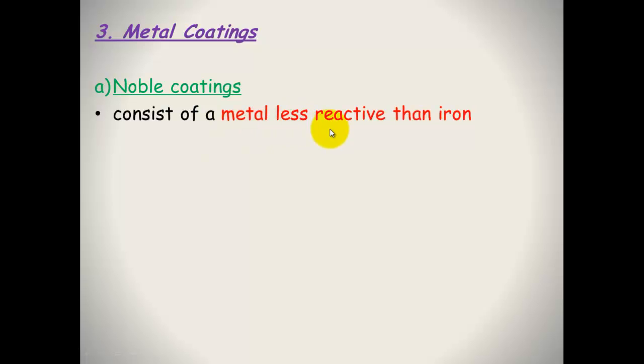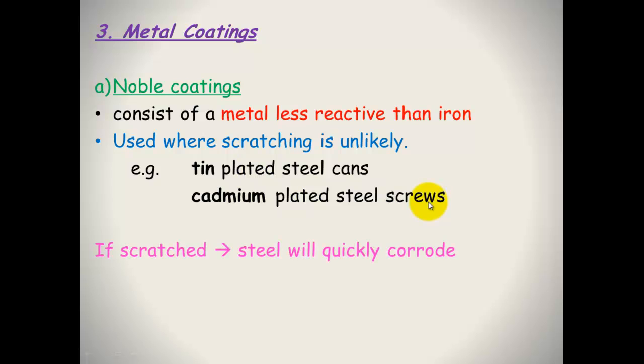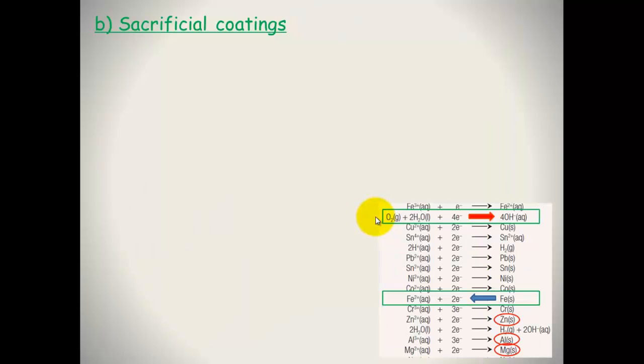Metal coatings. One of the easiest ways to protect iron is to cover it in some sort of coating. You could use a paint or you could use a metal which is less reactive than iron. This is used when scratching is unlikely. Tin-plated steel cans are one of the most common ones you'll see because the tin is on the inside and that protects the food from corroding the can. Cadmium-plated steel screws are another one that's quite common. If scratched, the steel will corrode quite quickly because iron is the more reactive metal. Something like tin: iron will be preferentially oxidized but the tin will coat it. No contact of the water and oxygen to the iron. But if this is scratched and exposed, corrosion will occur quite quickly.